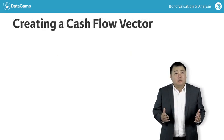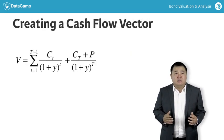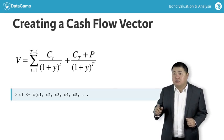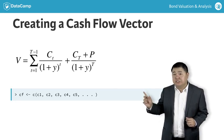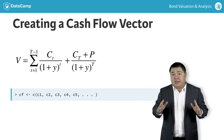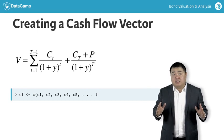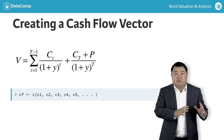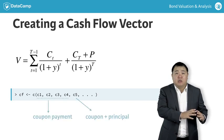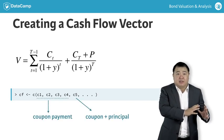So how do we run this analysis in R? In R, we can create a cash flow vector, CF, by laying out the cash flows as is and remembering that the last cash flow equals the par value plus the last coupon payment.